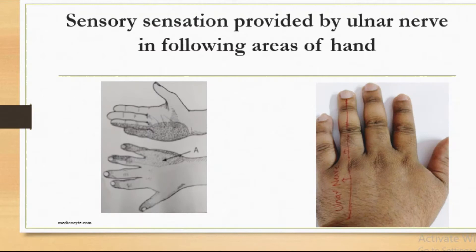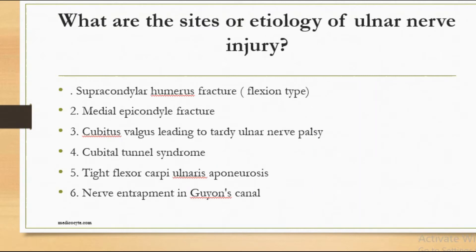Regarding sensory supply, the ulnar nerve supplies one and a half fingers on the medial side on the palmar aspect, and also one and a half fingers on the dorsal aspect. These are the sensory distributions of the ulnar nerve.